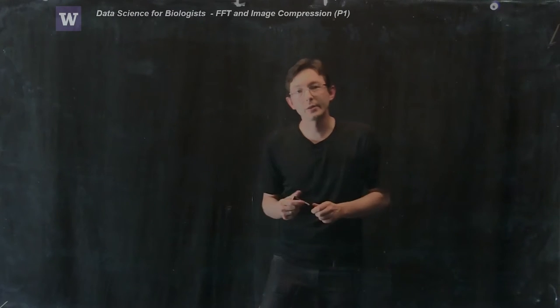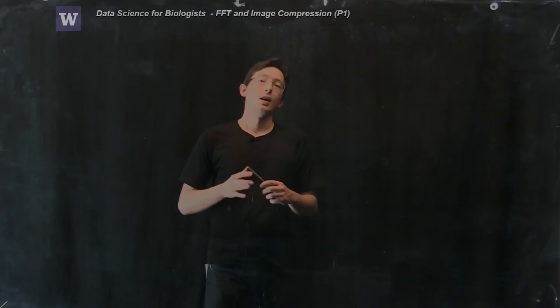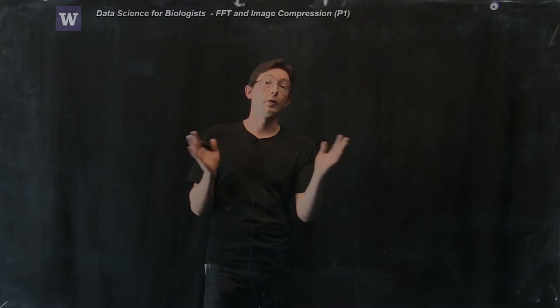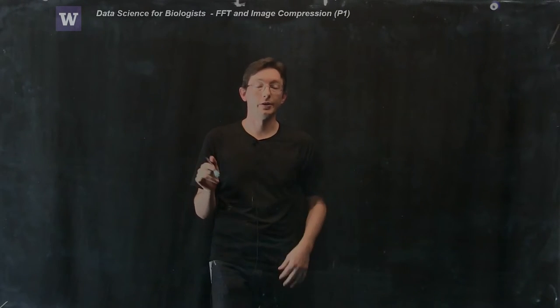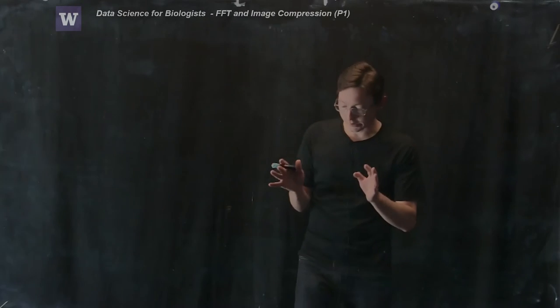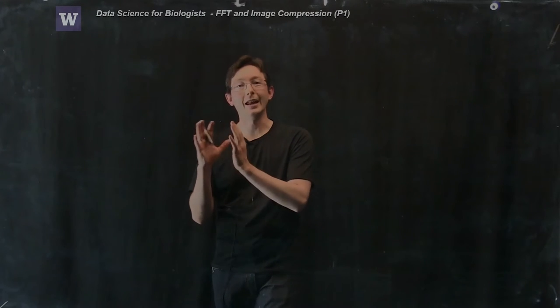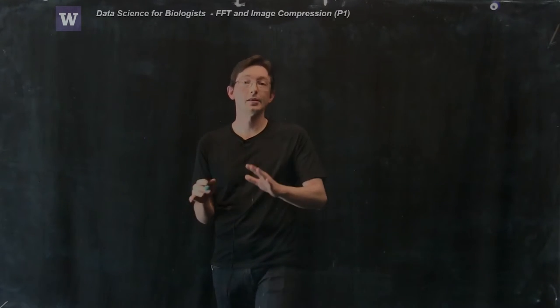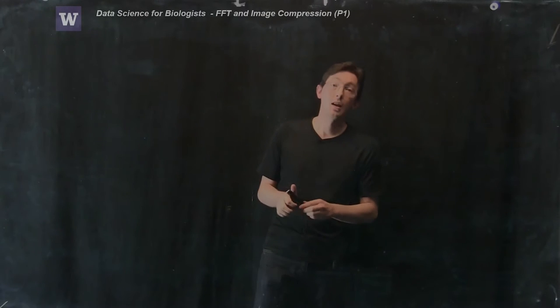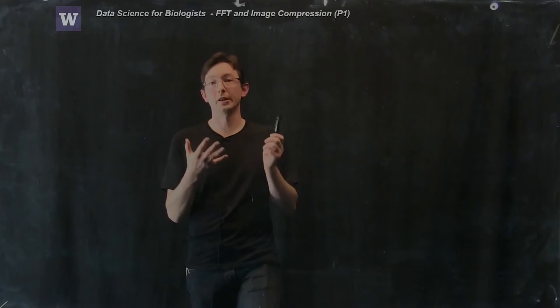Alright, welcome back everyone. So this is the third lecture in our series on Fourier transforms or fast Fourier transforms, and now we're going to go into an in-depth example on image compression. This is one of my favorite examples because this is really actually useful.